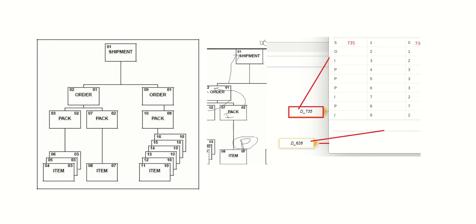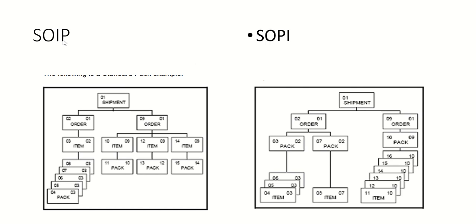Especially for HL segments, we are supposed to generate a sequence. Depending on our strategy — SOPI or SOIP — we need to generate the sequence for the D_75 as well as D_623 segments of the XML file of the EDI 856. SOIP stands for Shipment, Order, Item, and Pack; sometimes we may need to arrange the sequence as Shipment, Order, Package, and Item.